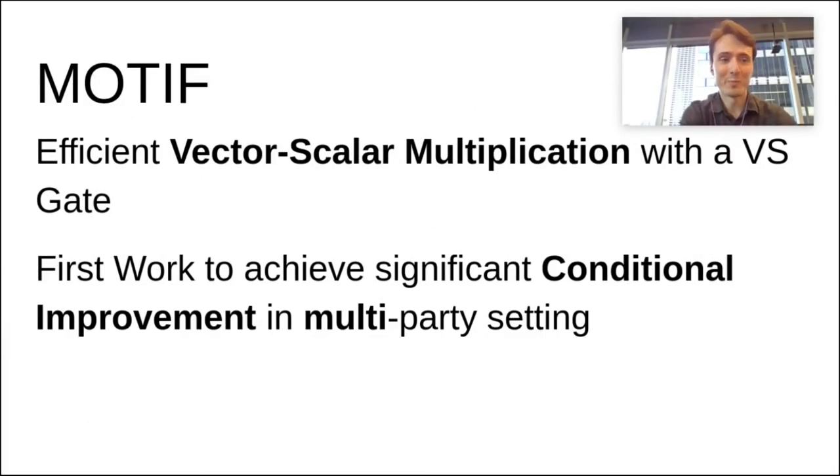So, this was Motif. Again, our contribution is that we reduce communication in a standard GMW protocol by taking advantage of conditional branching in a source program. Our improvement results in almost constant communication in the number of conditional branches. We are the first work to achieve significant conditional improvement in the multi-party setting. We do that by efficiently evaluating vector scalar multiplication via our versus gate. So, thank you for listening!